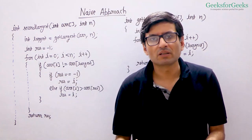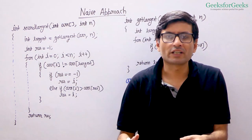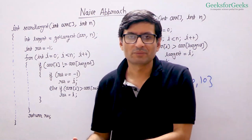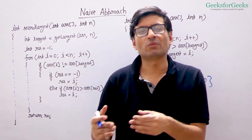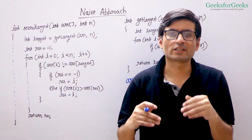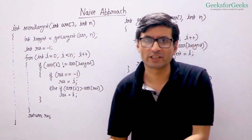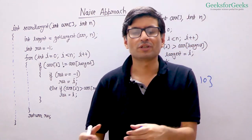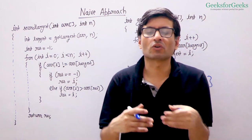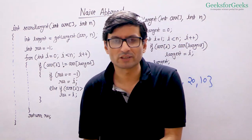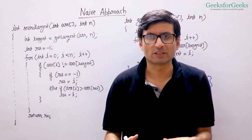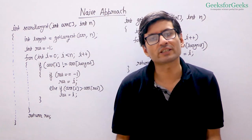The idea is simple. We first find the index of the largest element. Then we find the largest among the remaining elements — we compare only those elements which are not equal to the largest and find the largest among them. That is how we find the second largest.